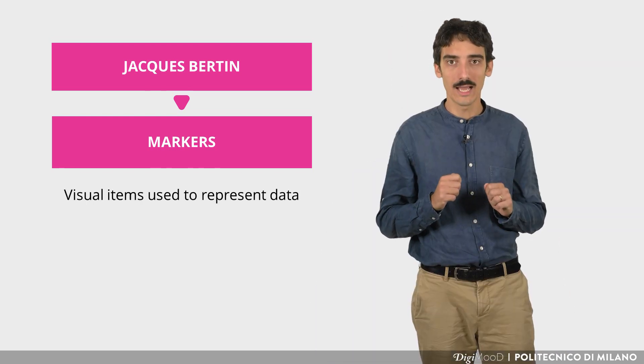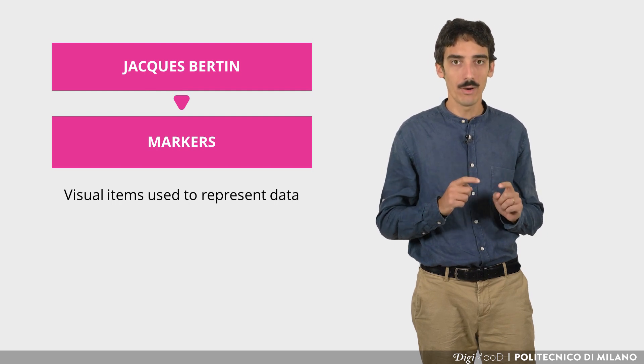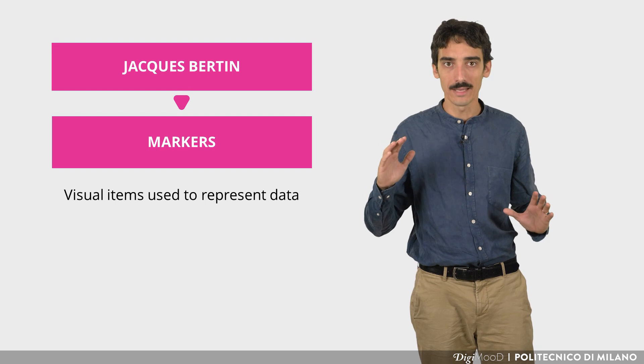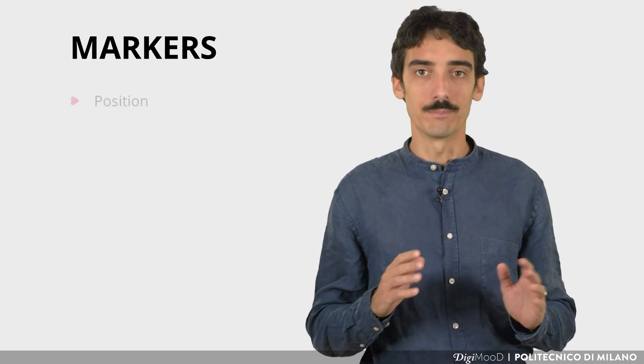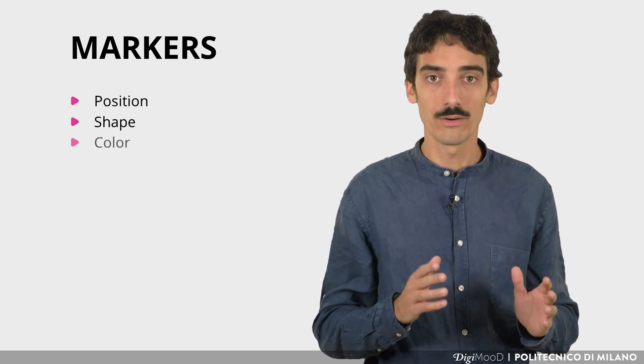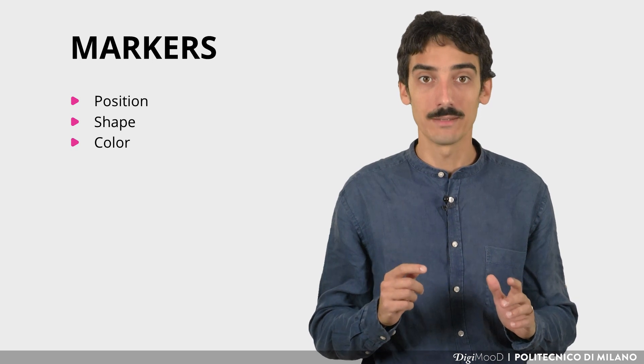Marks are visual items used to represent data. They can be points, lines or areas. Each marker can have different visual features. The position, the shape, the color and many others, as systematized more recently by Roth.